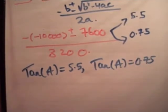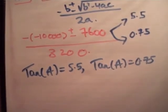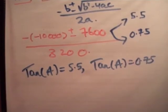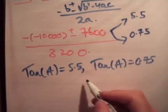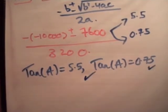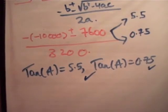Checking against the book: 5.5 is correct, and 3/4 (0.75) is correct — both values of tan a are verified. Now we're also asked for the time taken to reach the target in each case. We need an expression for time. Going back to the start of the question, we had t = x / (35 cos a).